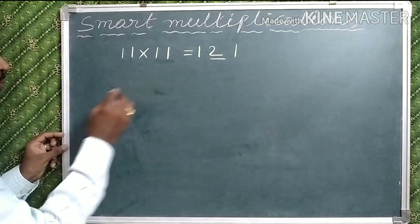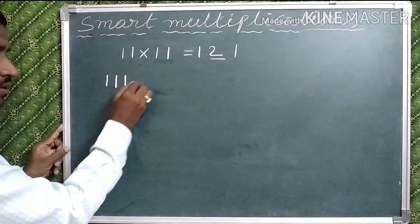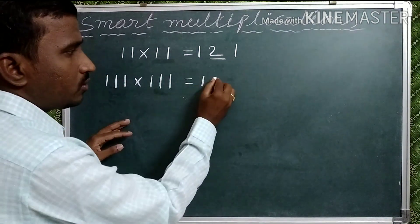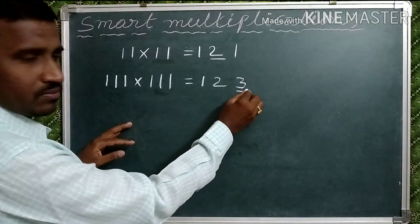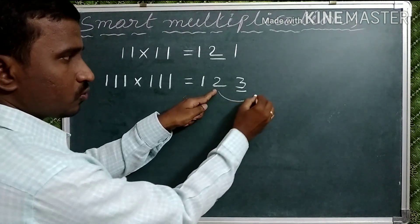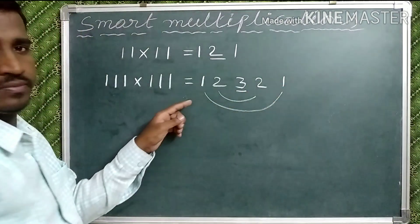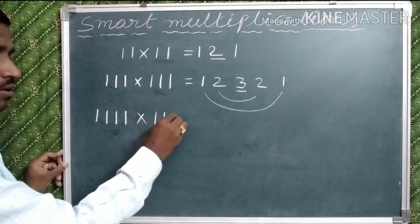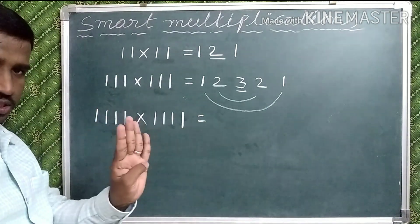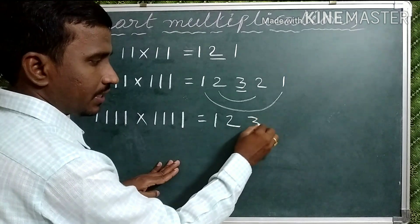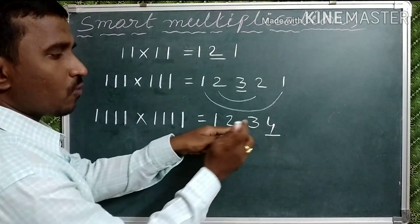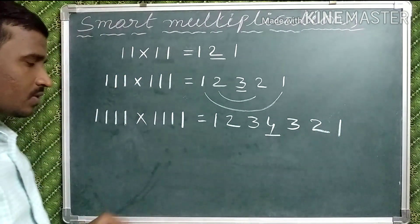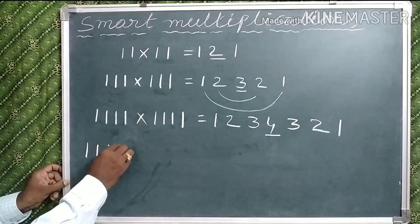Eleven into eleven gives 121. Now suppose we take three ones: 111 into 111. How many ones are there? Three ones. Write 1, 2, 3 — the highest digit is 3. Write before two numbers, then write again: 1, 2, 3, 2, 1.